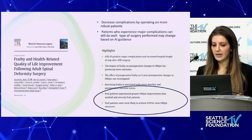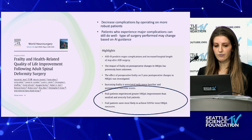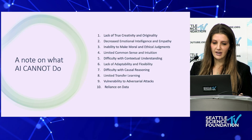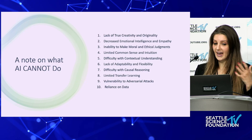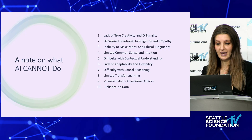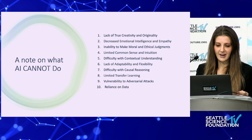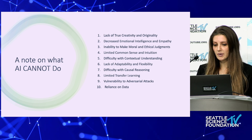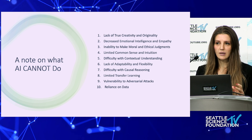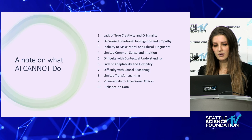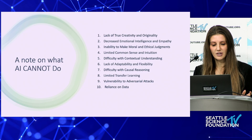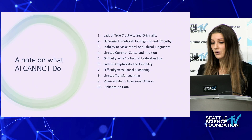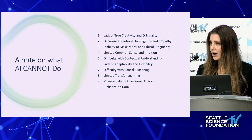Frail patients were also most likely to achieve MCID for the health-related quality of life measures — very important data. A note on what AI can't do: it lacks true creativity and originality, has decreased emotional intelligence and empathy, inability to make moral and ethical judgments for now, limited common sense and intuition — sometimes context is lost on AI — lack of adaptability and flexibility, no causal reasoning, limited transfer learning, and a reliance on data. As we get more data, AI is going to explode and get better at these things, but for now we still need human operators.